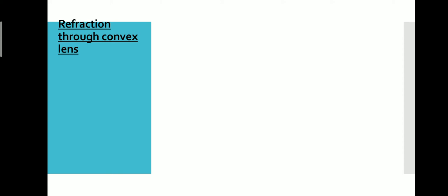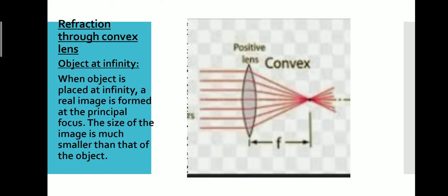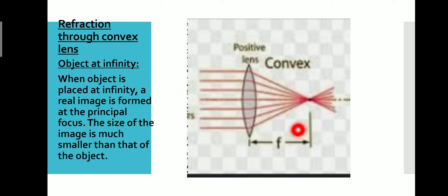Next we are going to see refraction through a convex lens. First, we take the object at the infinity position. If the object is placed at infinity, when the object is at infinity, the image will be formed at the principal focus F. This distance between the optic center and the focal point is your focal length F. When the object is placed at infinity, the image will be formed at principal focus F, and the size of the image will be smaller than the size of the object.